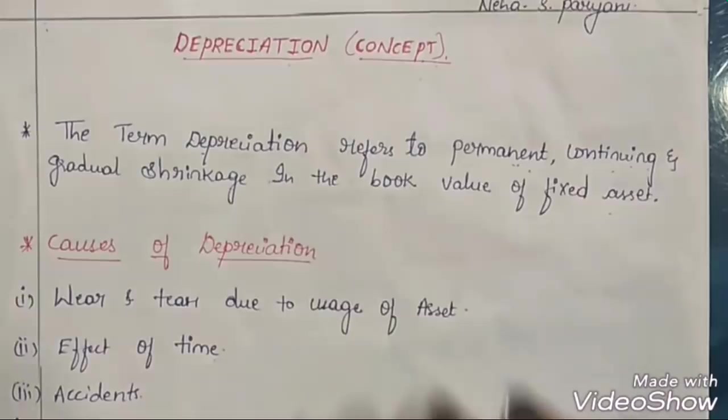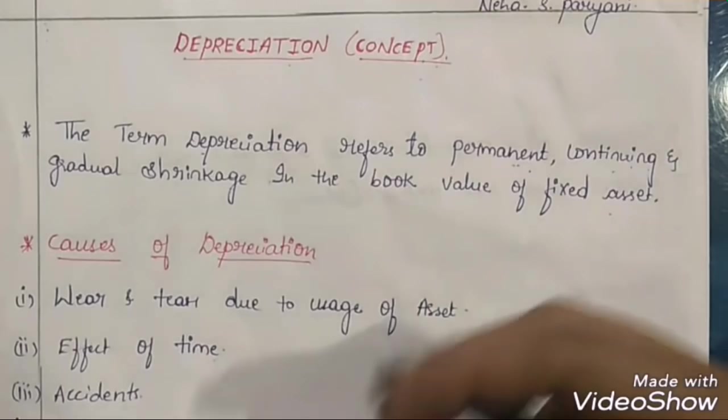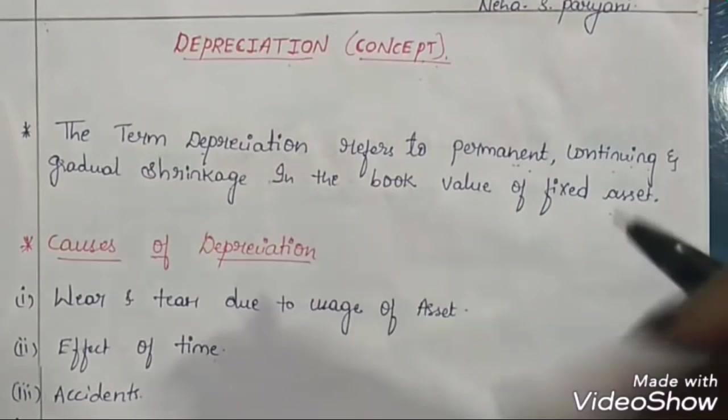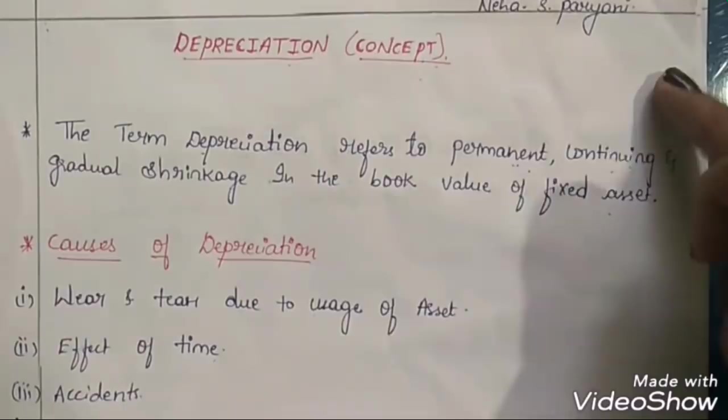When you resell your land or buildings, the value will have increased — you will get more than the original cost. That we call appreciation. If the value of a fixed asset increases year by year, it is called appreciation. If the value decreases year by year, it is called depreciation.